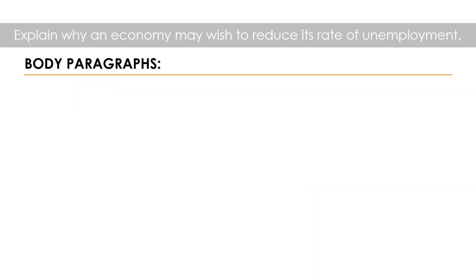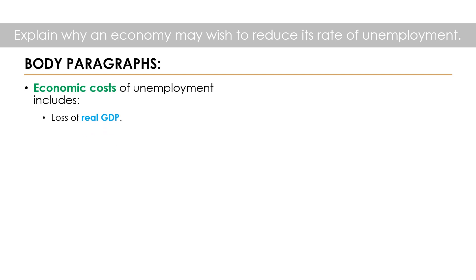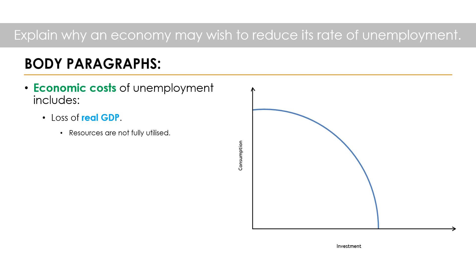Moving on to the body paragraphs, since we mentioned economic and social costs arising from high unemployment, we can dedicate each paragraph to a potential cost. The economic cost includes the loss of real GDP, meaning resources are not fully utilized. We can use a diagram to illustrate this: any point along the PPC curve, such as point B, means the economy is operating at full employment. When resources are underutilized, actual output falls to a point within the PPC, such as point A, indicating high unemployment.